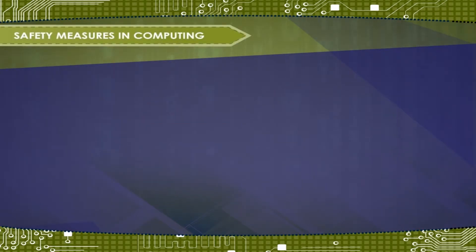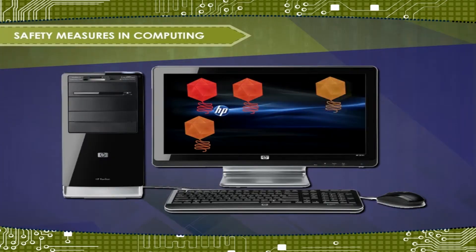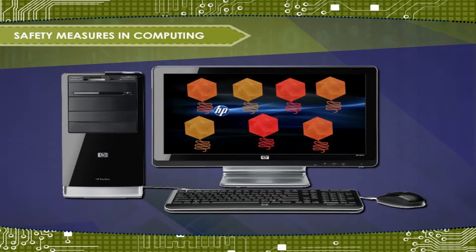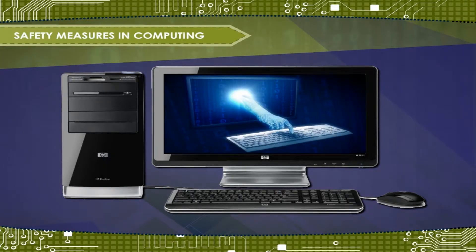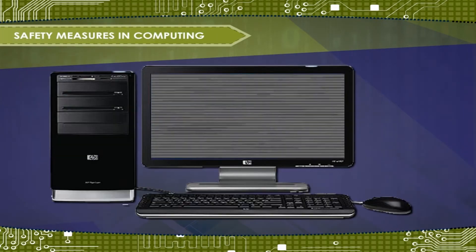Safety Measures in Computing: The impersonal nature of technology can give us a false sense of security. After all, no one can physically attack us through a computer screen. We tend to have an 'it won't happen to me' attitude. We may even believe that our computer programs are automatically taking care of all that internet security stuff for us. Sometimes we just avoid it altogether because, to be frank, we just don't get it.